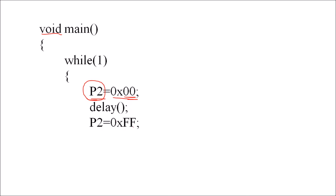After that we send logic 1 on each port pin, meaning we write FFH into register P2. In Embedded C, write this as 0xFF followed by a semicolon. This instruction sends logic 1 on each port terminal and all LEDs will glow. To keep the LEDs on for some time, we call the delay function again. So LEDs are off, then in off state for the delay period, then all LEDs glow, then in on state for the delay period. We close the while loop and end the main function.